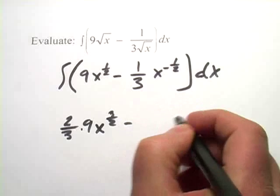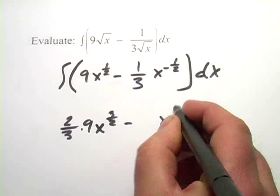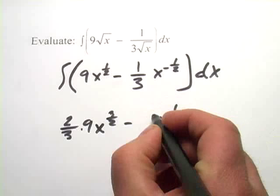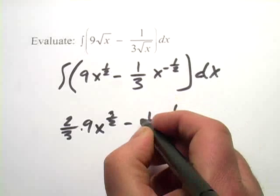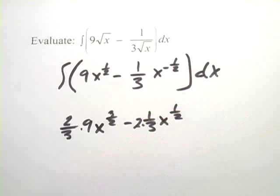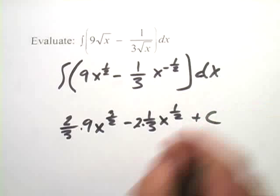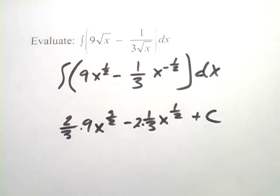And we'll do the same thing for this next one, so it would be x to the positive 1 half. And we've got our 1 third, and we multiply it by the reciprocal, which is 2. And then, of course, we have to add our plus big C, the constant.